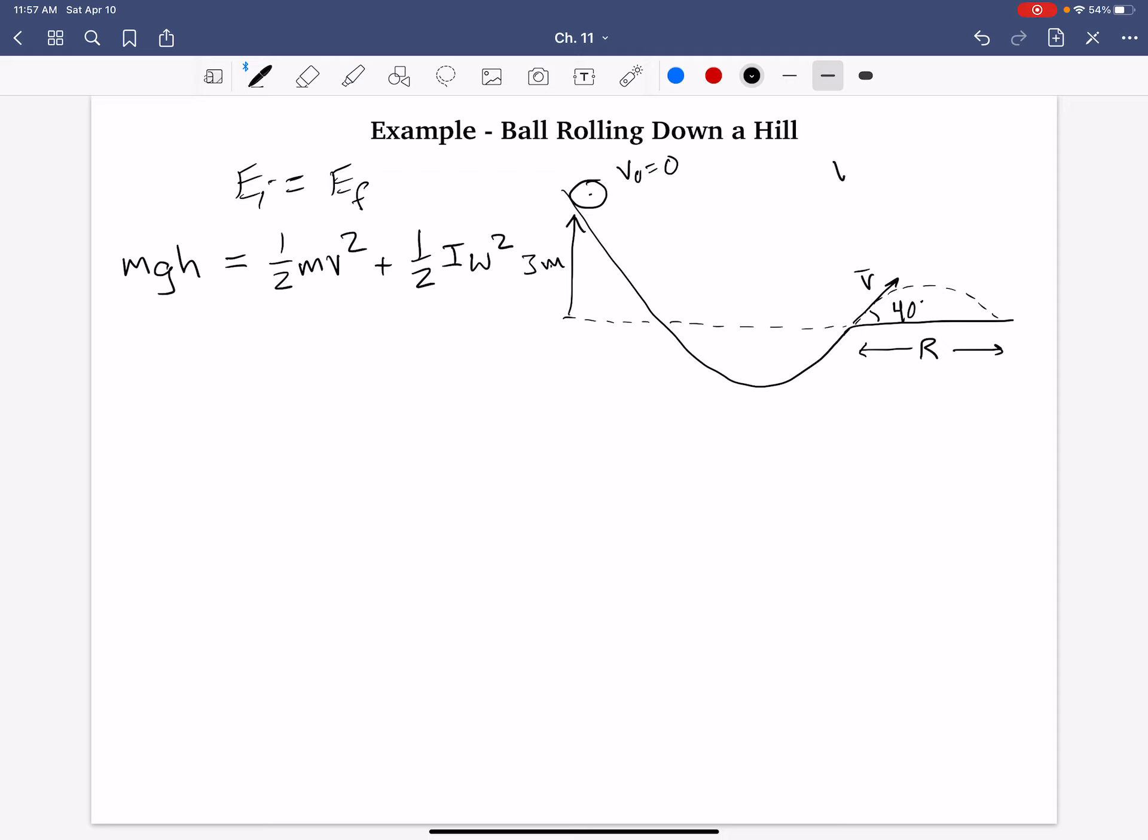which we know as related to the linear speed v. So, really, omega is simply v over r. And we can plug that in right there. So, let's do that.